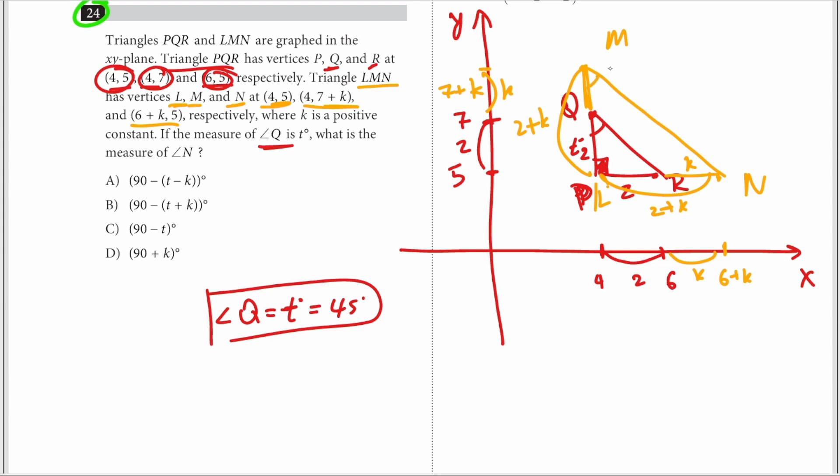Therefore this angle is equal to 45 as well, and this angle is also equal to 45 degrees as well. Now they are asking us what's the measure of angle N. Angle N is right there - it's 45 degrees. So angle N is also equal to 45.